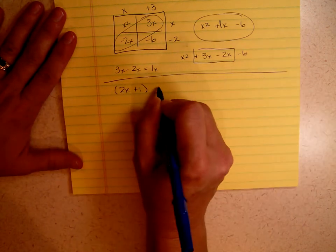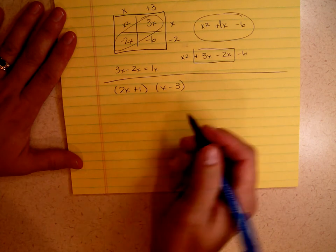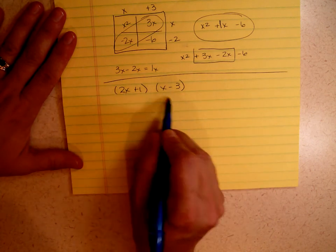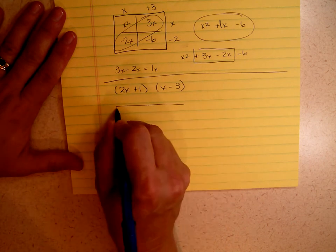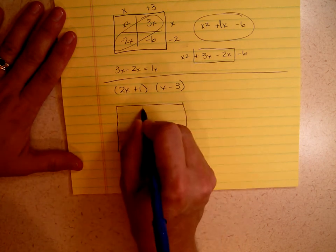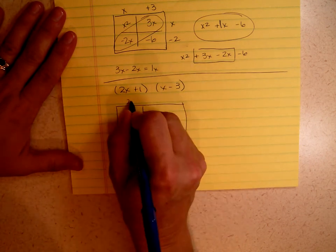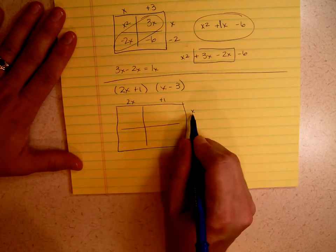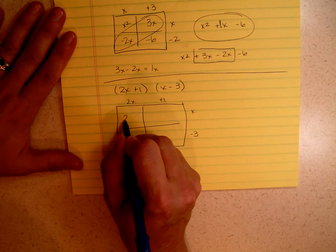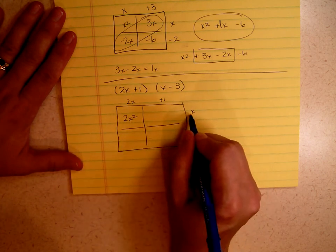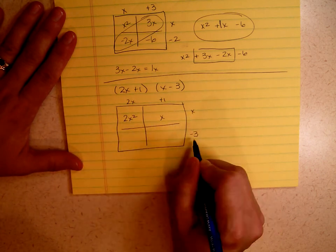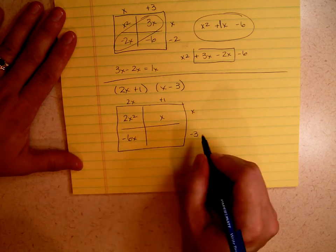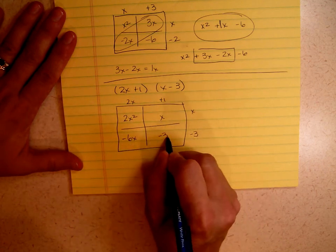4x plus 6 times 3x plus 7. Again, I'm looking at the fact that there's two elements in here and two elements in here. So I'm setting up a 2 by 2 matrix. 2x plus 1, x minus 3. x times 2x is 2x squared. x times 1 is x. Negative 3 times 2x is negative 6x. And negative 3 times 1 is negative 3.